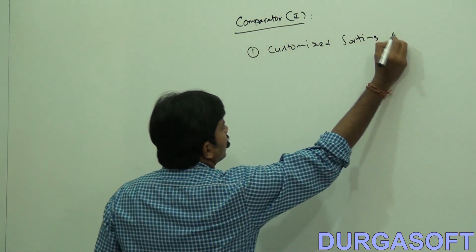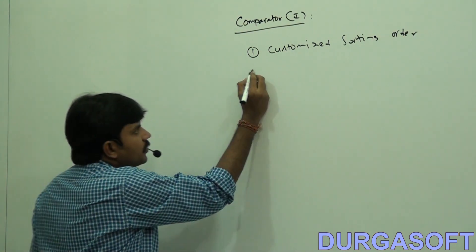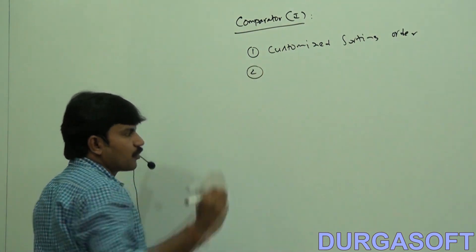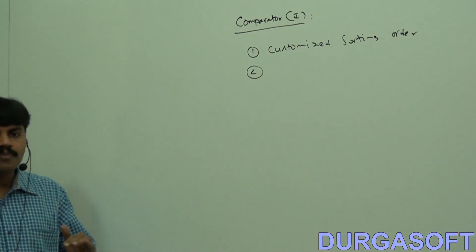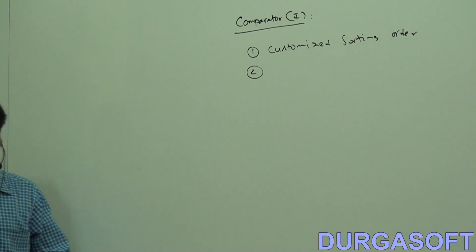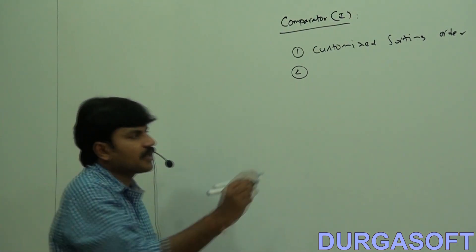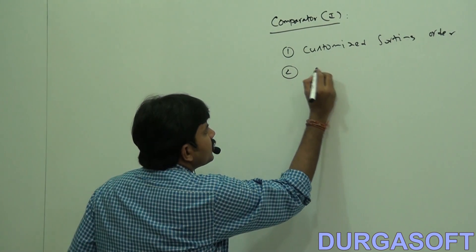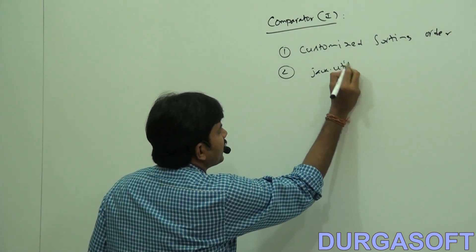Second point: Comparator is meant for customized sorting order. Where is the Comparator interface present? The Comparator interface is present in the java.util package.